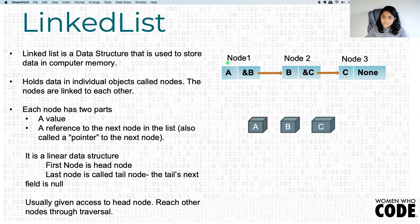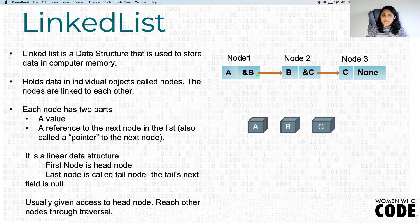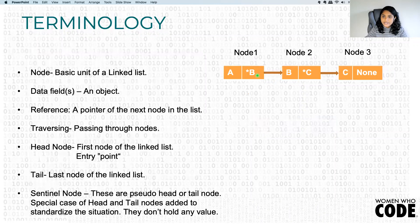Usually in programs we will be given access to the first node, that is the head node. The other nodes we reach through traversal. So what is traversal? Let's look at some common terminologies used in linked lists.